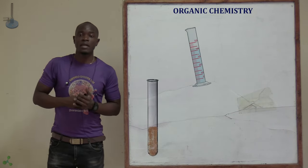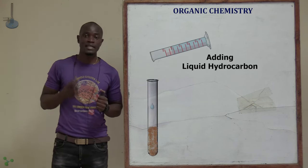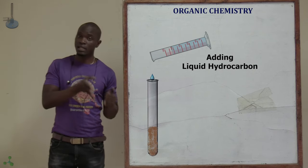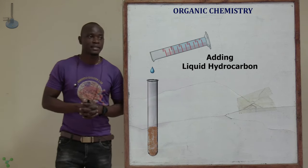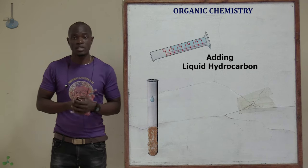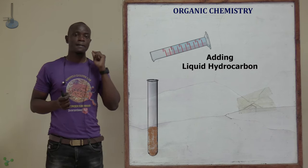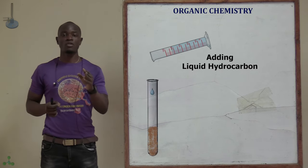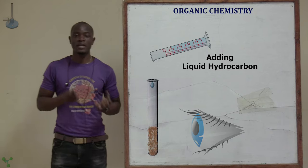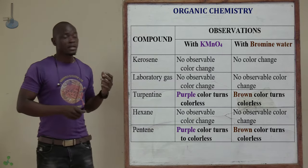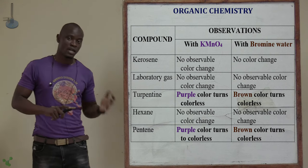If we are using a liquid hydrocarbon — like pentane, hexane, heptane, octane, nonane, or decane — add one centimeter cubed of bromine water inside a clean test tube, then add one centimeter cubed of the liquid hydrocarbon in the test tube and make observations. The same experiment can be repeated using potassium permanganate or potassium dichromate in place of the bromine water.